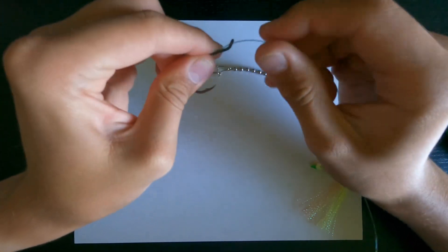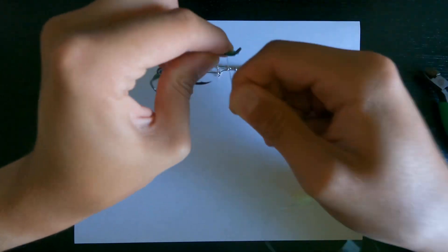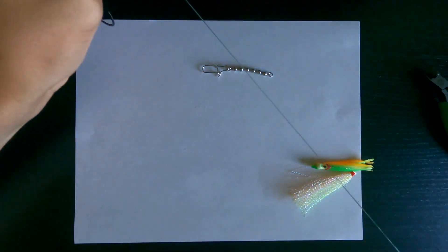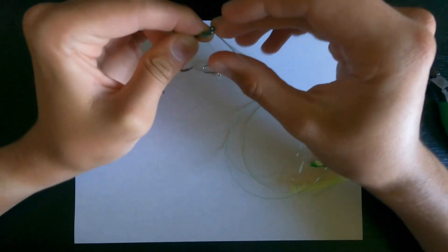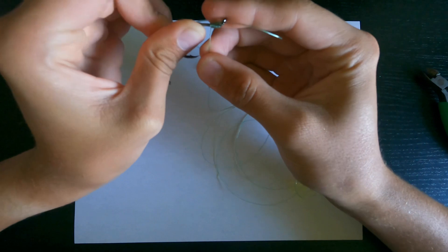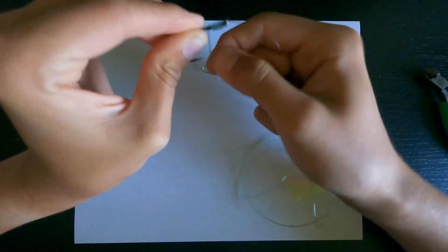So then I'm going to do another eight wraps: one, two, three, four, five, six, seven, eight. Go to the other end of my line, go back up through the eye again. Hold your wraps, lay that line down the shaft of the hook and another eight wraps.